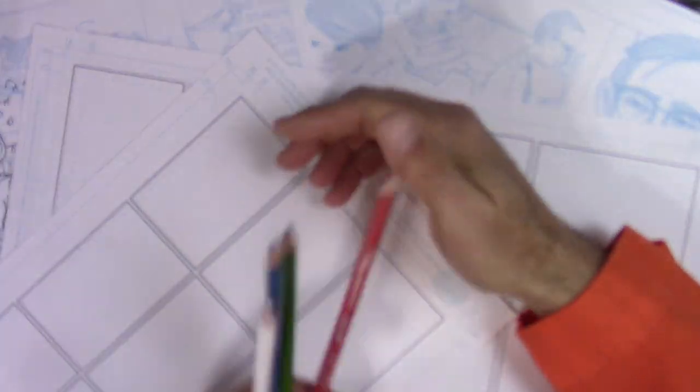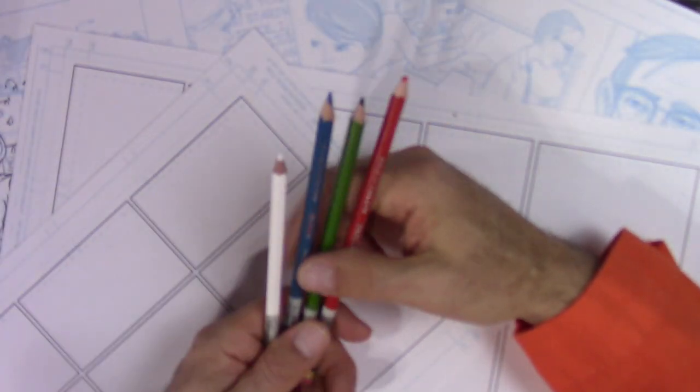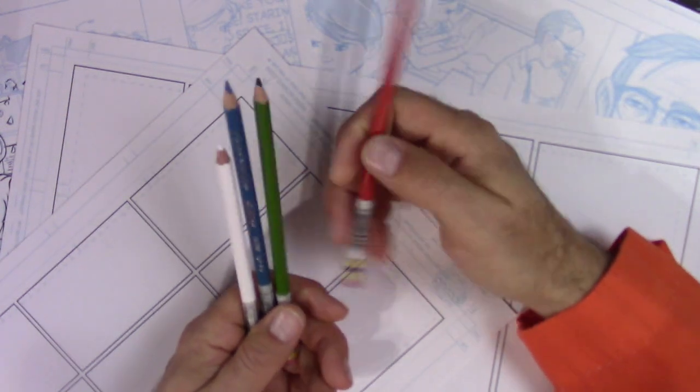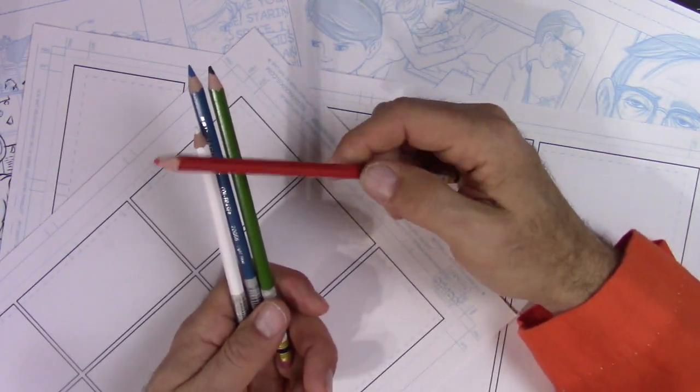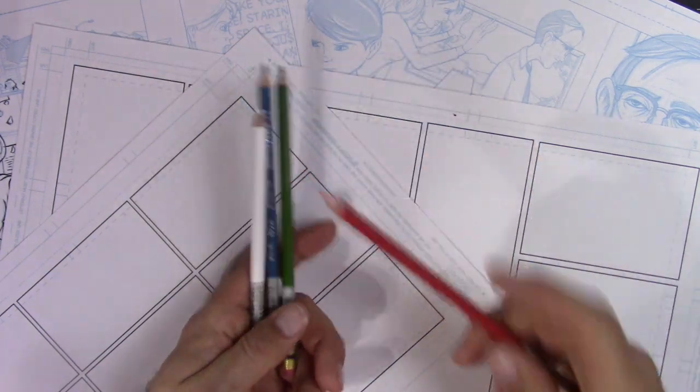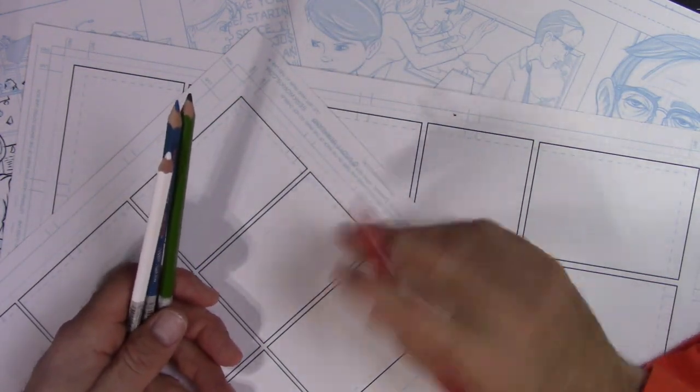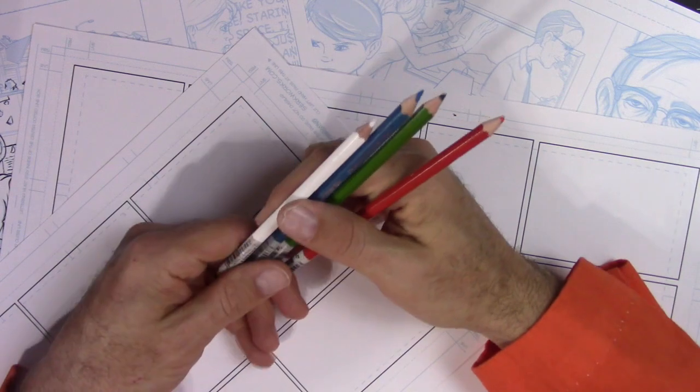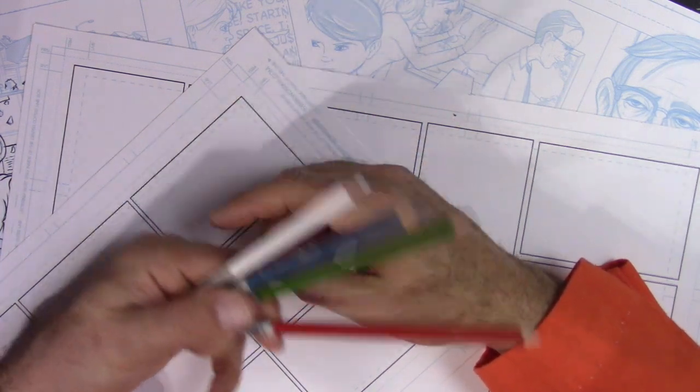For sketching, I use these Prismacolor Col-Erase Pencils. As the name implies, they are color and they do erase fairly well. I have a fairly light hand. If you've got a heavy hand, they might not erase as well as you'd like them to.